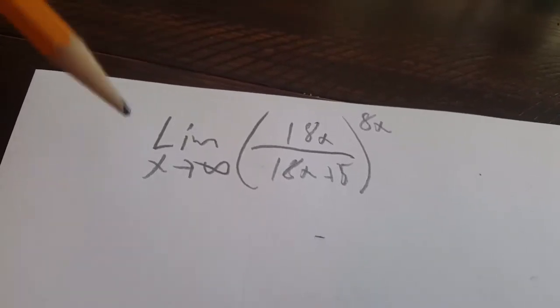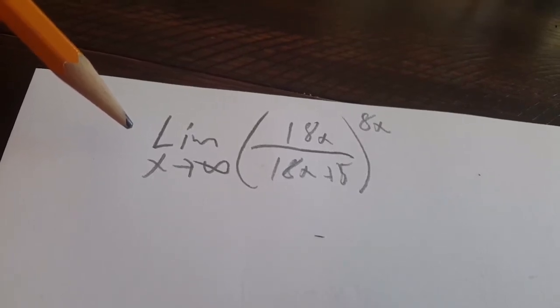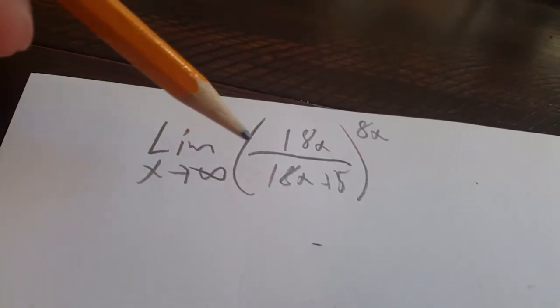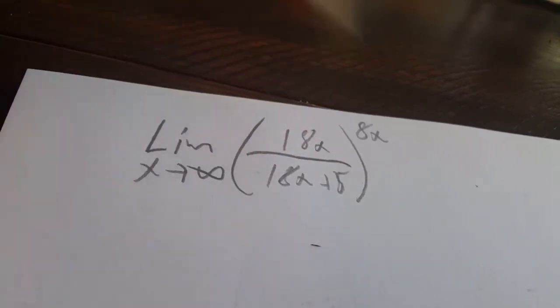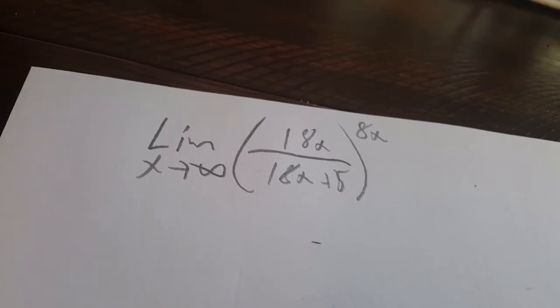So, this problem stumped me for a really long time. The limit as x approaches infinity of 18x over 18x plus 5 to the 8x. It doesn't look very friendly.